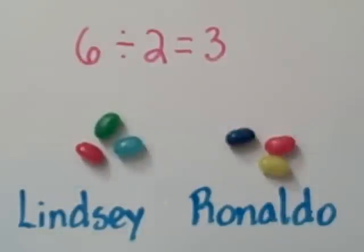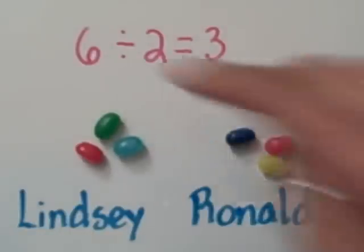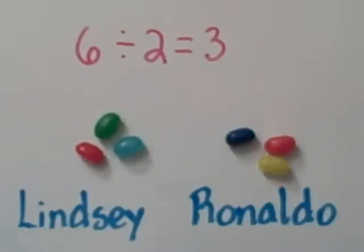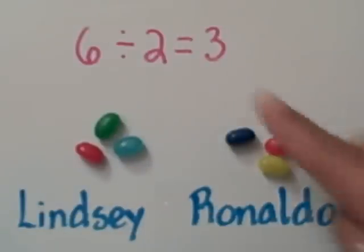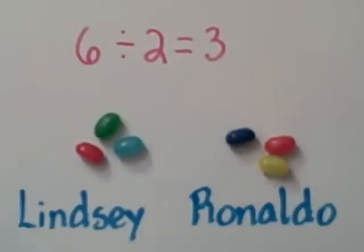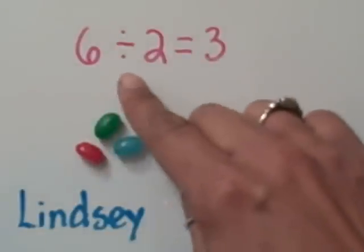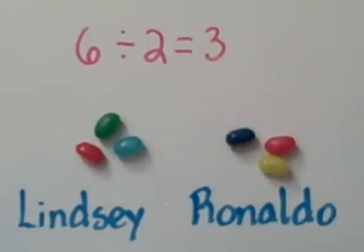Six is the total number of jelly beans. This is the division symbol — we say divided by. Two is the number of groups. We know this means equals, or the same as. And three is the number in each group. Read the equation with me: six divided by two equals three.